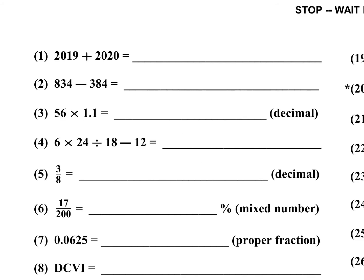Problem number one is 2019 plus 2020. You can add 19 plus 20, that would be 39, and then 20 plus 20 is 40, so the answer is 4039. For number two, subtract 84 minus 38 — the answer is going to end in a zero. 84 minus 38 is 46, wait — 4 minus 4 ends in zero and 83 minus 38 is 45, so the answer is 4050.